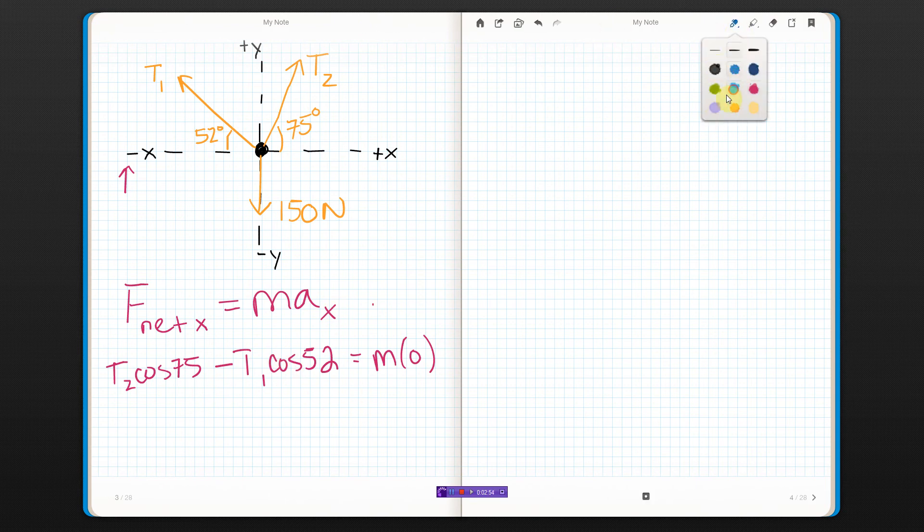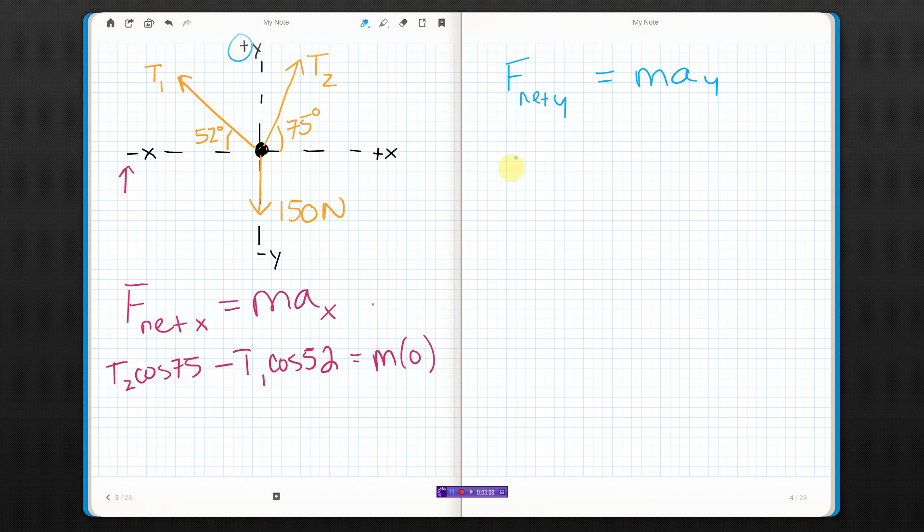I'm going to do this again in the Y direction. In the Y direction, both T1 and T2 are near positive Y, so they're both going to be positive, but I need to use just the Y component. So I'm going to have T1 sine 52 plus T2 sine 75, and then this 150 is down, straight down, so I don't need any angles involved, equals still zero. So A-Y is going to be zero.